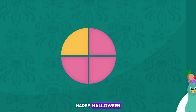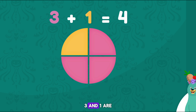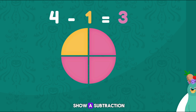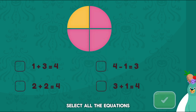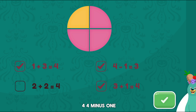Happy Halloween! Today we're going to learn another way to think of equations. This picture shows that three pink plus one yellow equals four total. Three and one are parts of a whole. The same picture can show a subtraction: four total minus one yellow equals three pink. Select all the equations that match the picture. One plus three equals four. Three plus one equals four. Four minus one equals three. Good job!